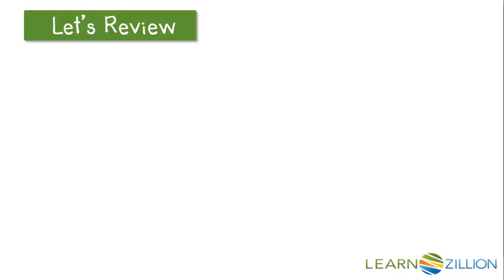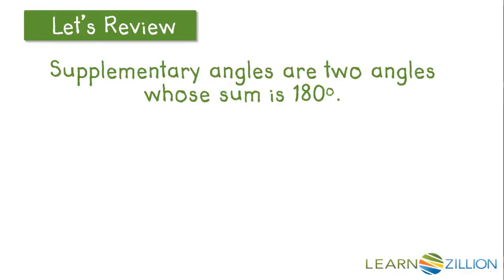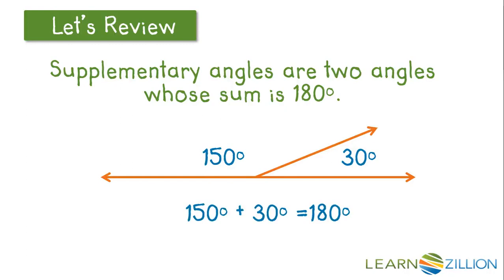Let's review. We know supplementary angles are two angles whose sum is 180 degrees. Here we have two angles: one measures 150 degrees and one measures 30 degrees. We know they are supplementary because 150 degrees plus 30 degrees equals 180 degrees.